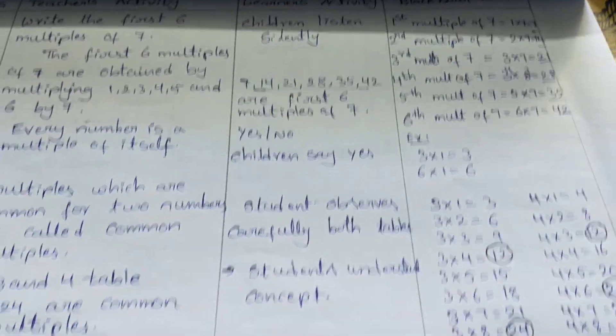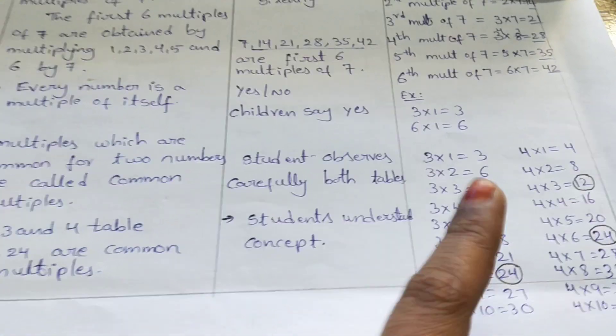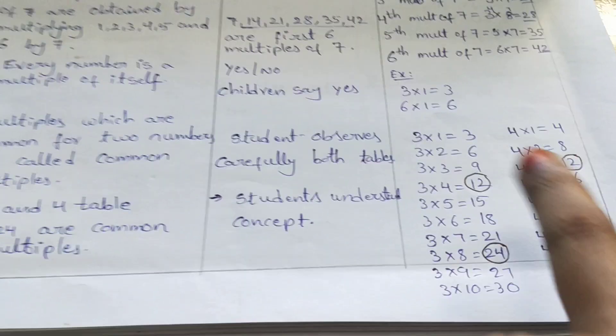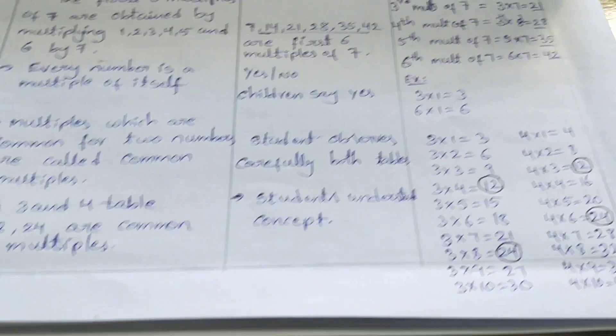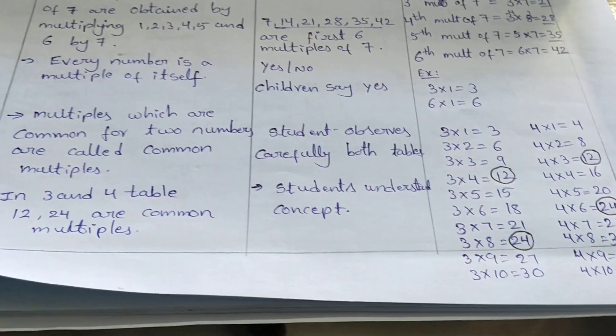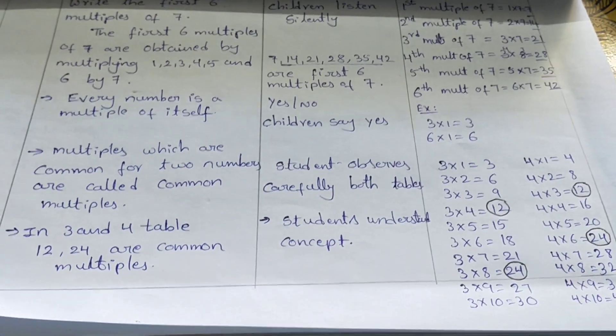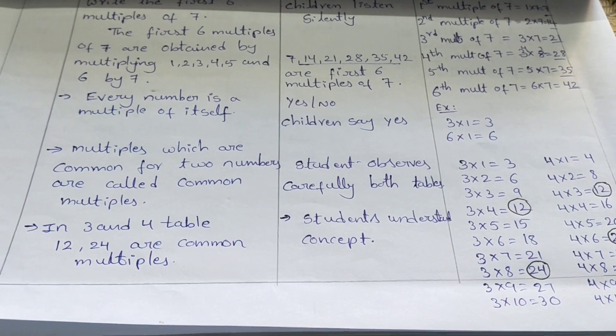Three and four table. What are the common? First, teacher asks to write three table and four table. In that common multiples, students will come to know and find out easily. 12, 24 are the common multiples of 3 and 4.